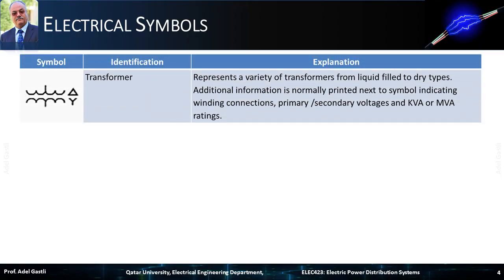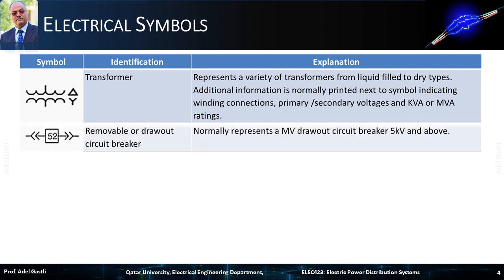The transformer symbol in the first row represents a variety of transformers from liquid-filled to dry types. Additional information is normally printed next to the symbol, indicating winding connections, primary and secondary voltages, and KVA or MVA ratings.